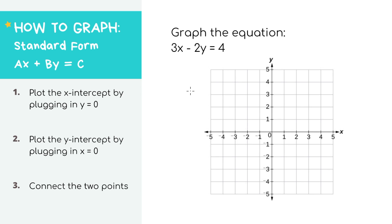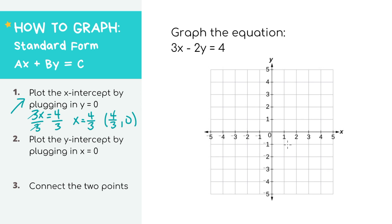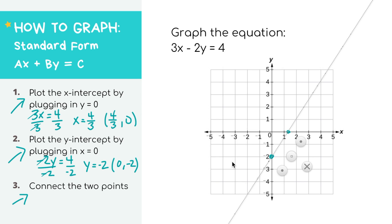This is our second standard form example and our final example for this video. Step one: plugging in y equals zero, we get 3x equals four, and x equals four over three. It's a fraction — not a clean divide — but not everything in life is clean and easy. Our first point is four over three comma zero. Step two: plugging in x equals zero, we get negative 2y equals four, so y equals negative two. Our second point is zero comma negative two. Step three: connect the dots — and that's our graph.